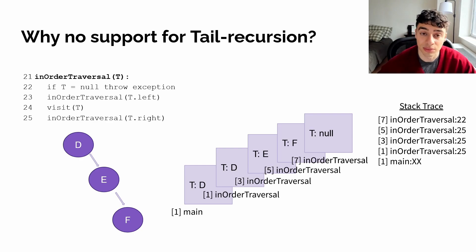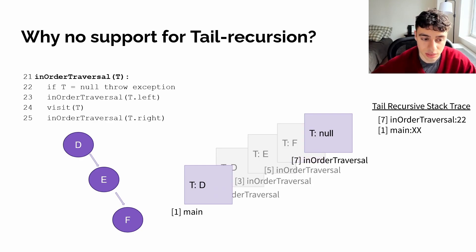However, if we were to implement this with tail recursion, this is what our stack trace would look like. We'd have our calling frame, and then we'd have our seventh in-order traversal frame at line 22. Now for this trivial example, it doesn't really make too much of a difference because we can tell where the exception is coming from.